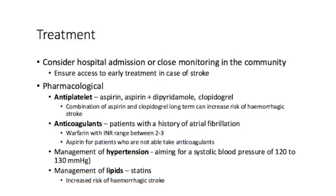Management of hypertension with pharmacological agents, dietary monitoring, and reducing salt intake is vital, aiming for a systolic blood pressure of 120 to 130 mmHg. Management of lipids with statins, for example, is another key consideration — though be mindful that anti-lipid agents may slightly increase the risk of hemorrhagic stroke. It's important to control lipid profiles, as one of the underlying causes of transient ischemic attack is atherosclerosis-induced ischemia, so keep that in mind when recommending treatments to patients.